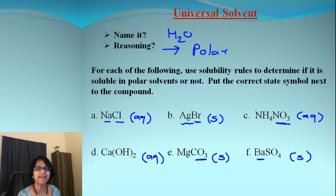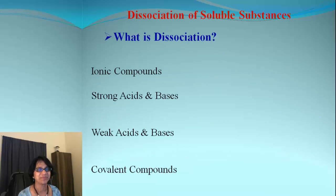For magnesium carbonate, carbonate comes out to be a solid. And for barium sulfate, barium is an exception, so that will also be solid. It is simply looking at the chart and predicting the solubility for each compound.